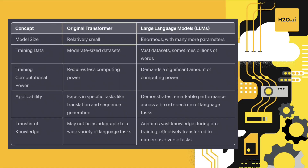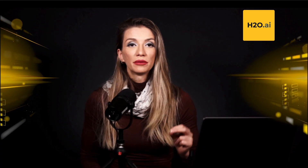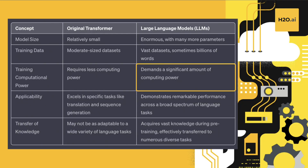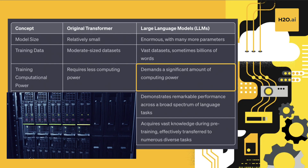What about size and training? How do transformers and LLMs differ in this aspect? The original transformer model can be relatively small and is typically trained on moderate-sized datasets. In contrast, large language models are enormous — they consist of many more parameters and are trained on vast datasets, sometimes containing billions of words. As a result, training LLMs requires a significant amount of computing power.